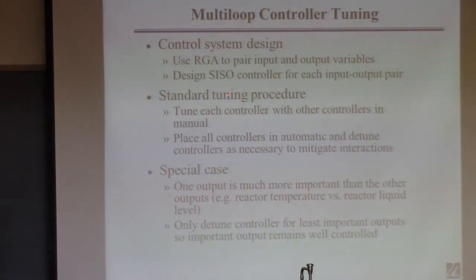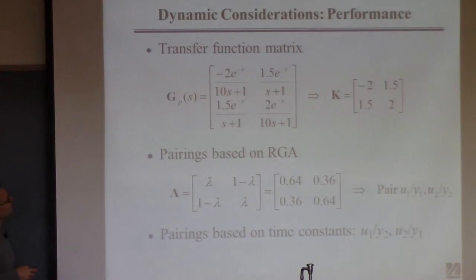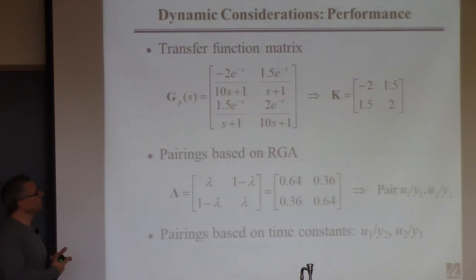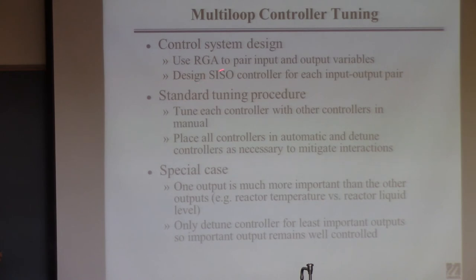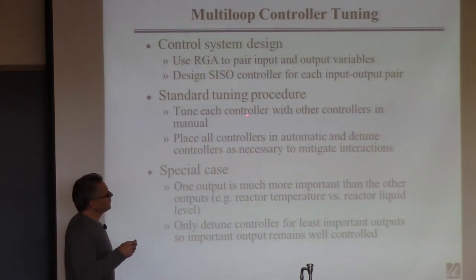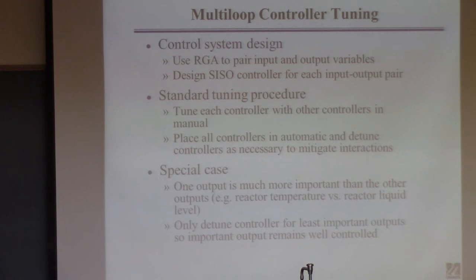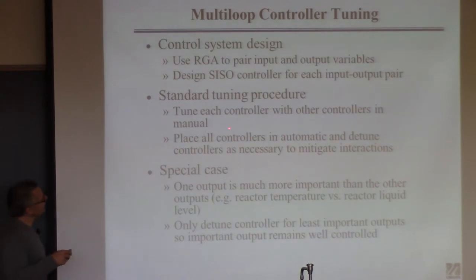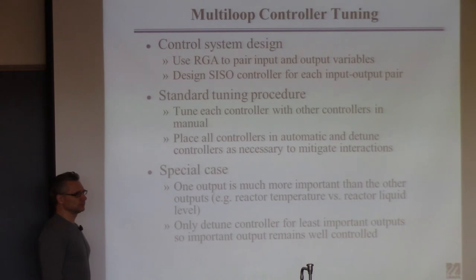How are we going to go about doing this whole design? A common problem is that I give you a transfer function matrix and tell you, first, figure out how to pair the variables, and second, design a controller for each input-output pair. Use the RGA to pair the variables — divide and conquer in engineering. You tune each controller by itself with the other controllers not turned on, because an underlying assumption is that we can build controllers that work by themselves — that's single input, single output, basically the whole course.